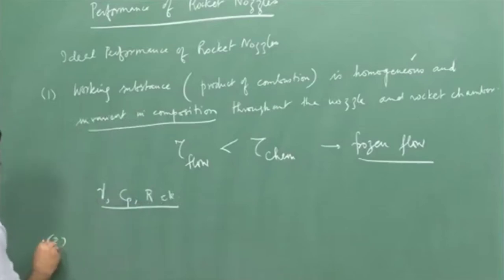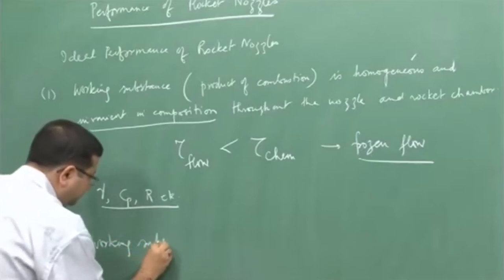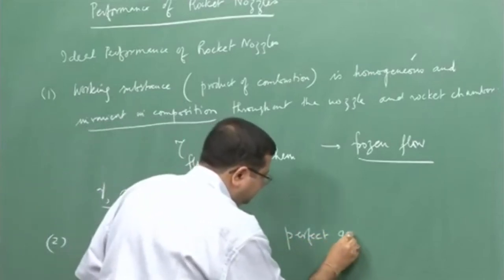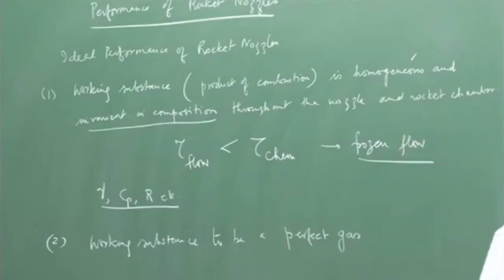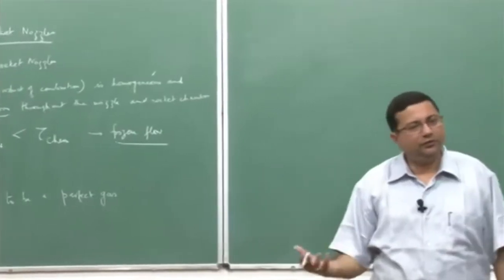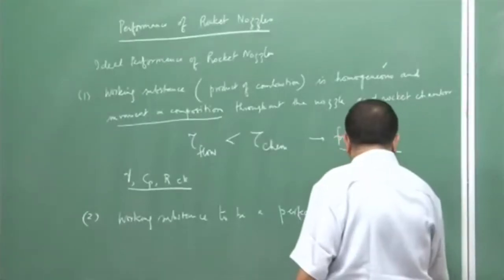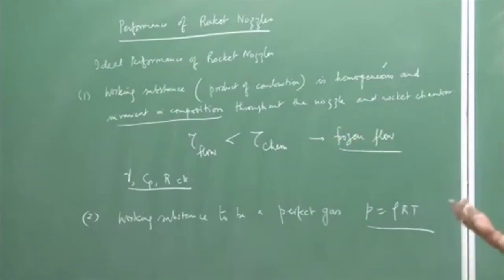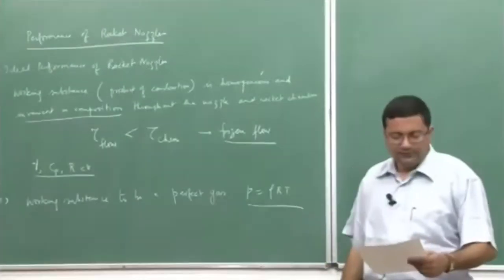Next, let us consider the working substance to be a perfect gas. Our working substance is the product of combustion, which is a mixture of various gases. We can assume this mixture to be a perfect gas, which means it follows the perfect gas equation of state: P = ρRT. This is a very universally used assumption in any gas flow and is a reasonably good approximation.